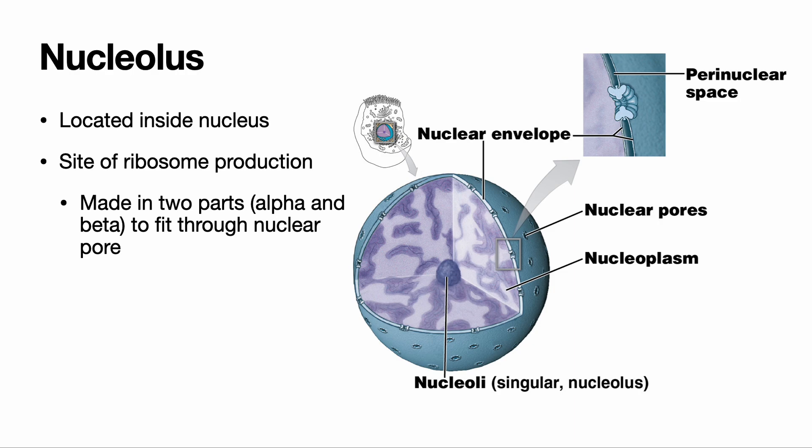The nucleolus is what we call a transient organelle — sometimes it's there and sometimes it's not. It is located inside the nucleus, so watch out for the similar spelling. The nucleolus is where ribosomes are made. Ribosomes are made in two parts inside the nucleus because the nuclear envelope is a double membrane with pores that are hard for most things to pass through. They must be made in two parts small enough to fit through the nuclear pores and then reassemble in the cytoplasm.